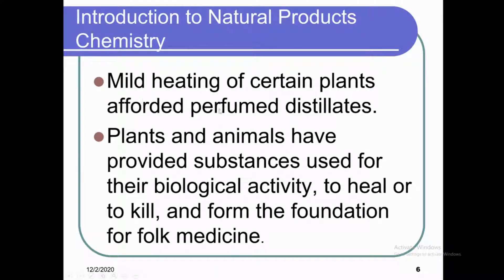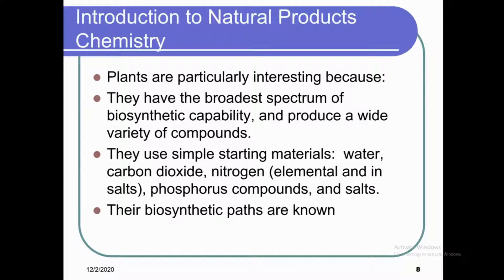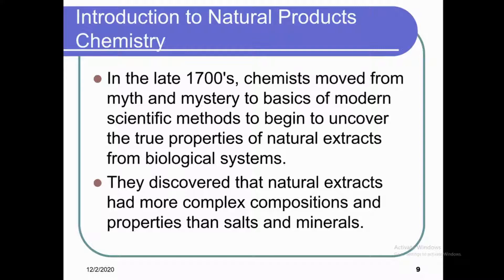Mild heating of certain plants afforded perfumed distillates. Plants and animals have provided substances used for their biological activity — to heal or to kill — forming the foundation for folk medicine. In ancient times, before medicinal chemistry was developed, people used to extract chemicals from plants for medicinal purposes. Most natural products have usually come from plants and microorganisms. Plants are particularly interesting because they have the broadest spectrum of biosynthetic capability and produce a wide variety of compounds using simple starting materials: water, carbon dioxide, nitrogen, and phosphorus salts.